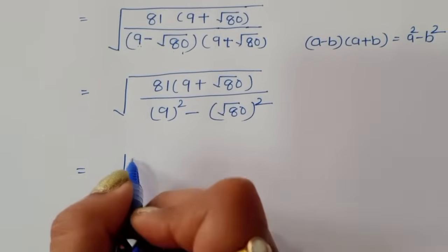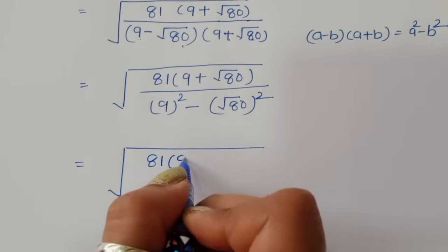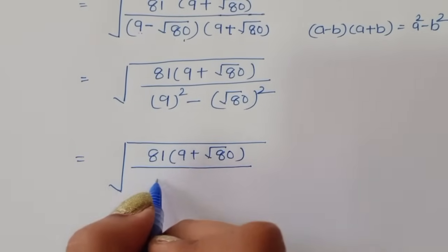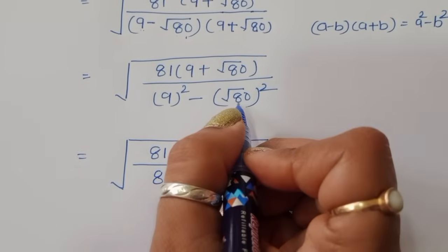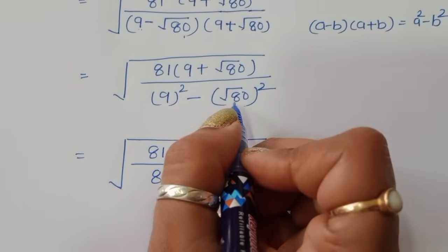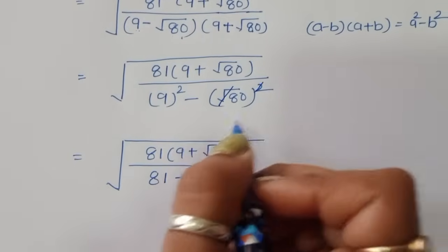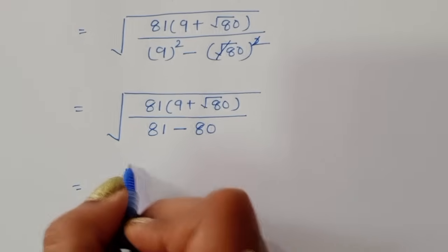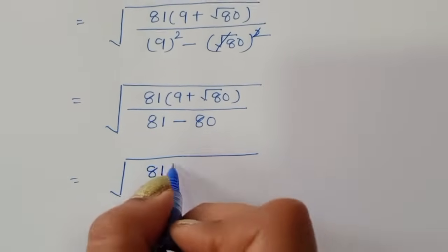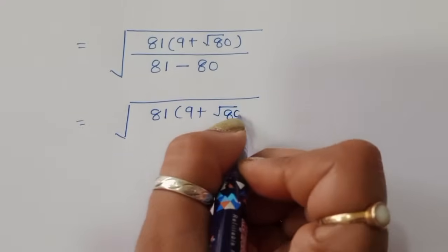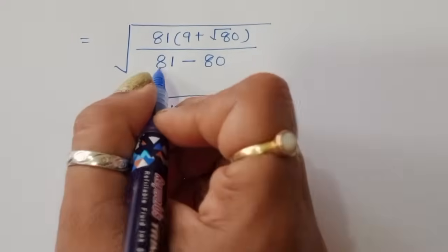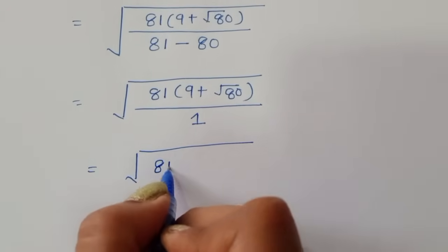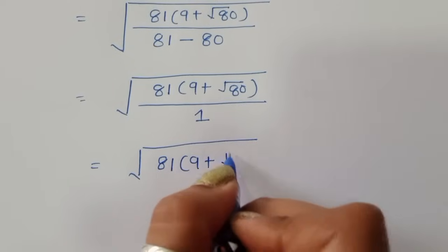This equals 81 times 9 plus square root of 80, divided by 9 squared minus 80. Since the square is cancelled from the square root of 80 squared, it becomes just 80. So the denominator is 81 minus 80, which equals 1. Therefore we can write this as 81 times 9 plus square root of 80.